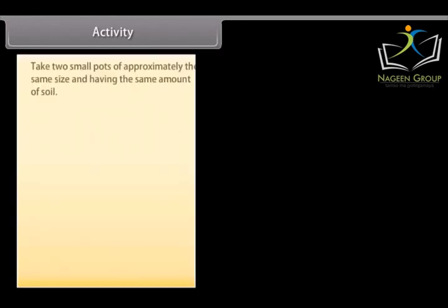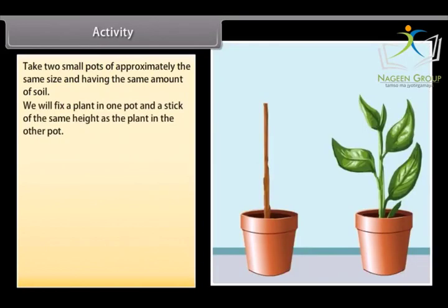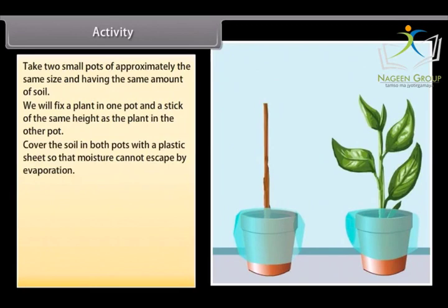Activity: Take two small pots of approximately the same size and having the same amount of soil. Fix a plant in one pot and a stick of the same height as the plant in the other pot. Cover the soil in both pots with a plastic sheet so that moisture cannot escape by evaporation.